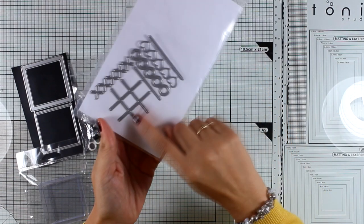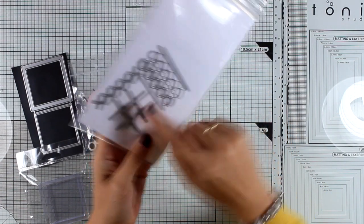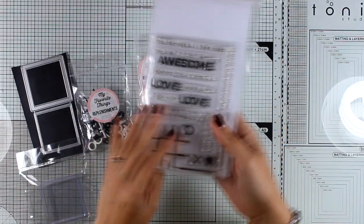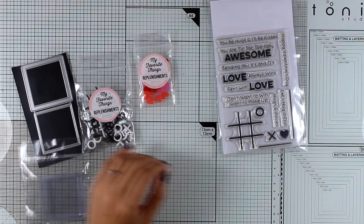This is the X and O's stamp set, and you can also get matching dies where you will get the hearts, the little O's, the X's, as well as the grid for your tic-tac-toe. And there are lovely sentiments perfect for friendship cards as well as for Valentine's Day.